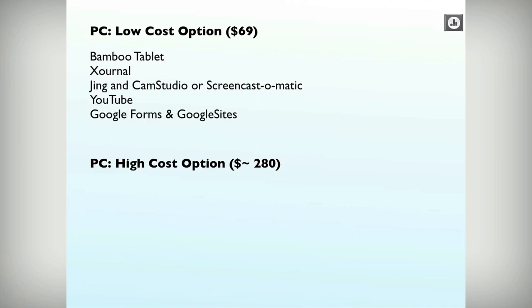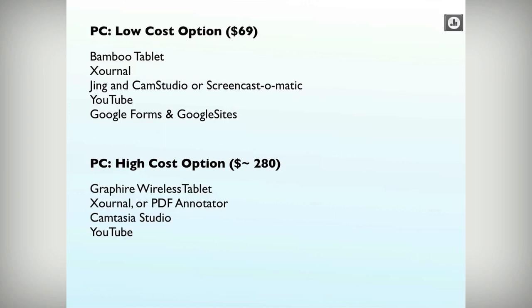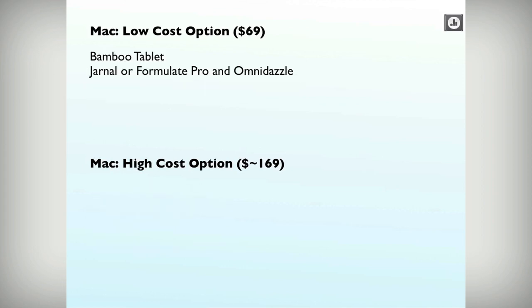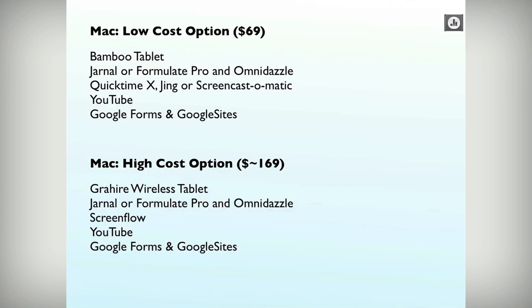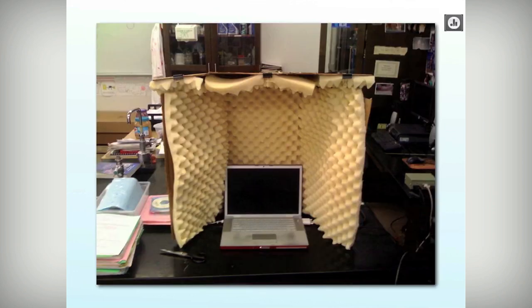In terms of cost options — these slides are available on my website and the Google site for this YouTube Studio — the low cost option on a PC runs about $69 and the high cost option around $280. There is a teacher version of Camtasia Studio that's cheaper, around $190. On the Mac, there's a low cost and a high cost option. I made that little recording studio out of cardboard and egg crate — kind of ridiculous looking but it works really well and shows how this stuff can be done really cheaply.